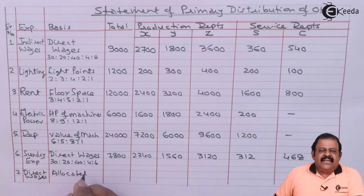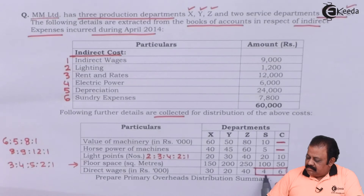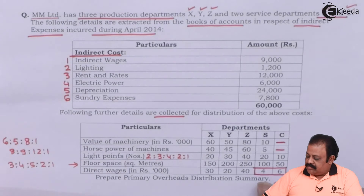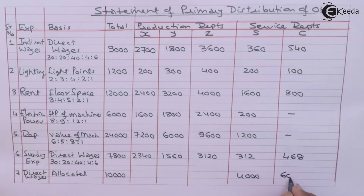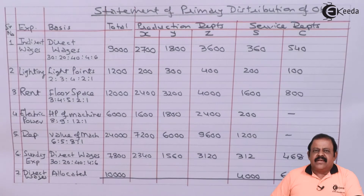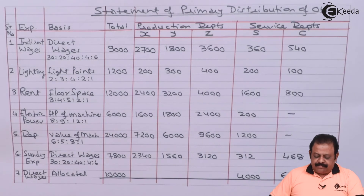For direct wages allocation, we have to consider only the service departments: S is 4,000 and C is 6,000. We can now take the column total to find the share of overheads for each respective department.